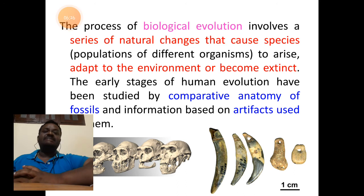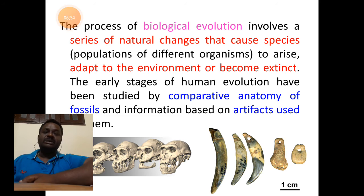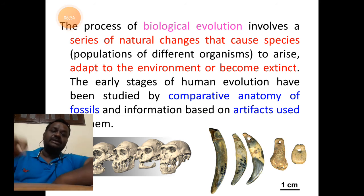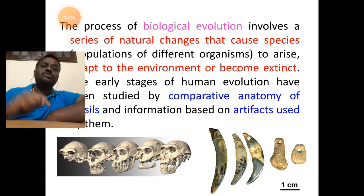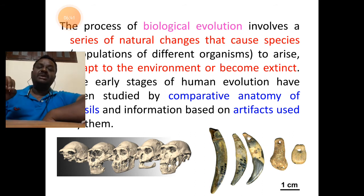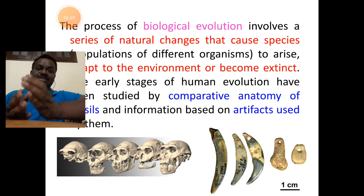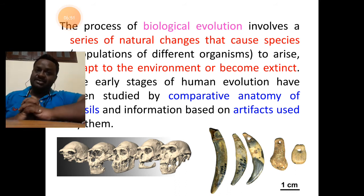All these paleoanthropological books explain the process of biological evolution of human beings, involving speciation in the human race. It is due to a series of natural changes which cause speciation. This human race arose due to adaptations to changing environments. Organisms which could not adapt to these new changes died and many became extinct. Paleoanthropologists have studied the comparative anatomy of recovered human fossils and their artifacts — the things used by ancient man.